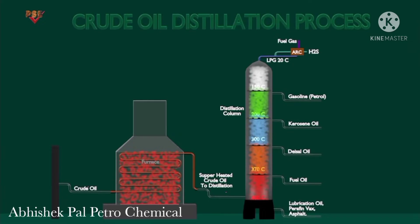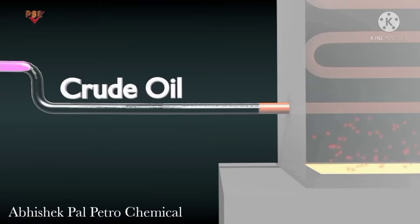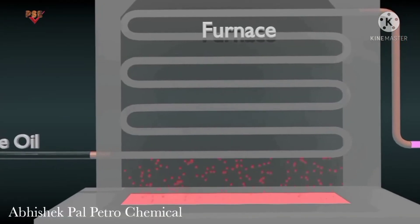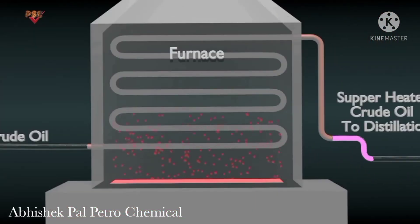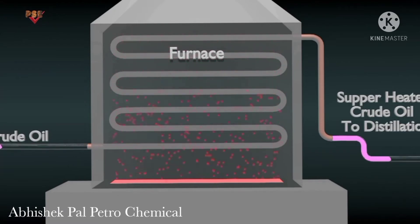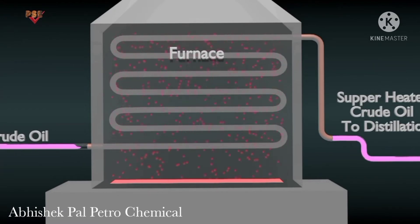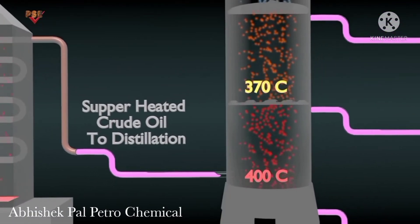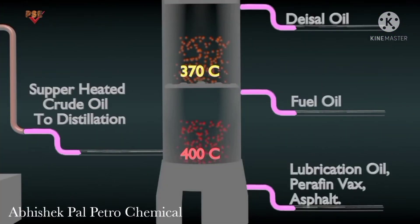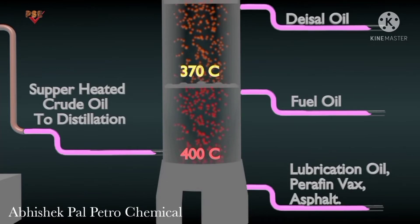To simplify the process, we consider one tower where the distillation process is taking place. Crude oil is supplied to a furnace before the distillation tower, where it is heated and vaporized to become the crude oil mixture. The vapor and liquid mixture is then fed into the bottom section of the tower. The feed section is the hottest point in the distillation tower and can reach as high as 400 degrees C.